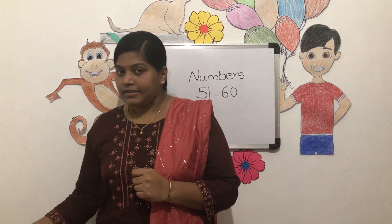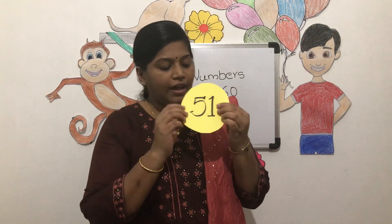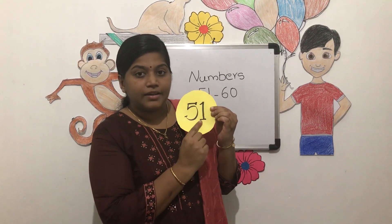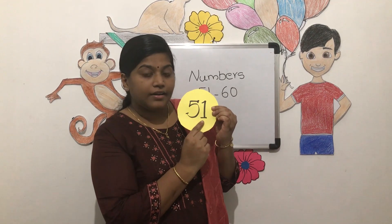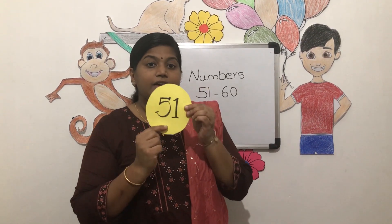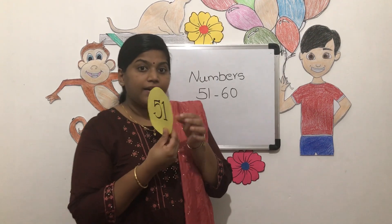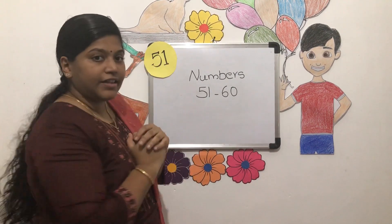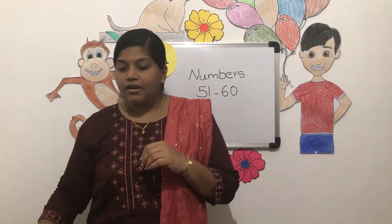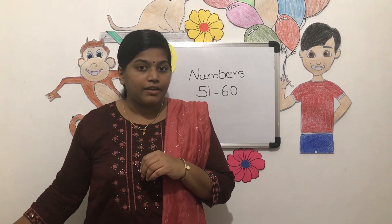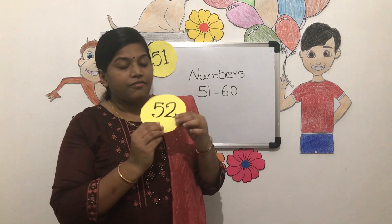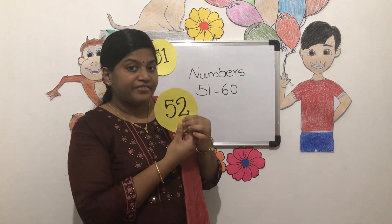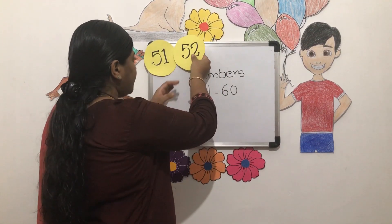So first look at this number. I have one 5 here, and the next number is 1. 5 1 — how do we read? It is 51. Now what comes after 51? It is 5 2. 52.